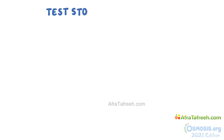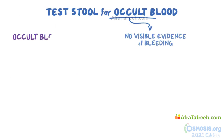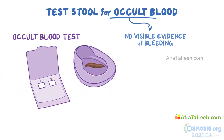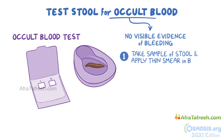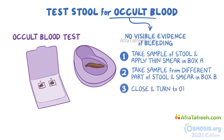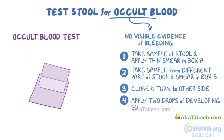You may be asked to test the stool for occult blood, where occult means there's no visible evidence of bleeding. This can be done using an occult blood test. First, put on clean gloves. Open the flap of the test slide. Using a tongue depressor, take a small portion of stool and apply a thin smear on the test paper in the first box, or box A, of the slide. Then using a different tongue depressor, take a stool specimen from a different part of the stool. Apply a thin smear on the second box, or box B. Close the slide cover and turn it to the other side. Open the cardboard flap and apply two drops of the developing solution that comes with the test kit on boxes A and B. Wait 10 to 60 seconds as specified by the manufacturer.